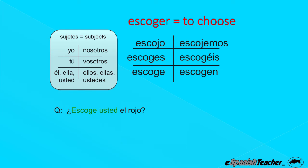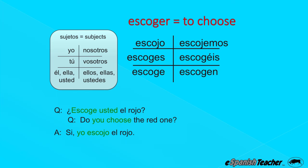¿Escoge usted el rojo? — Do you choose the red one? Now this question teaches another principle: "el rojo" means "the red one." In Spanish you'll often use an adjective like rojo with the article — el rojo, the red one; el bueno, the good one; el malo, the bad one. Answer: Sí, yo escojo el rojo — Yes, I choose the red one.